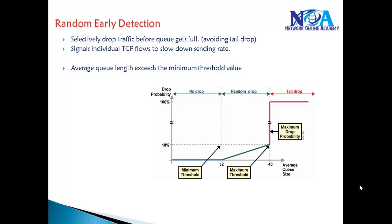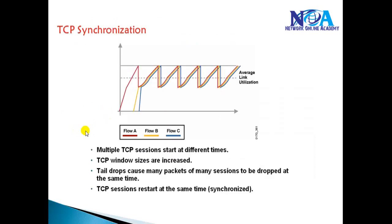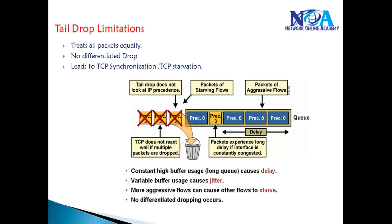In this section we will talk about the Random Early Detection (RED) mechanism, which is a congestion avoidance mechanism to overcome the issues with tail drop and TCP global synchronization. TCP synchronization issues generally happen when you have a large number of TCP streams and because of congestion your packets get dropped, causing TCP sessions to increase or decrease their transmission rates at the same time — this pattern is referred to as TCP synchronization.